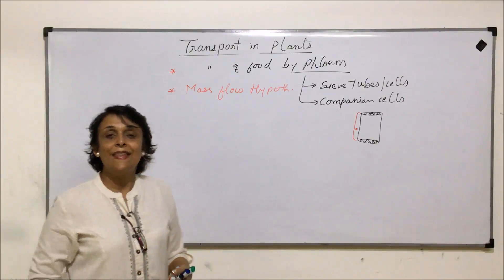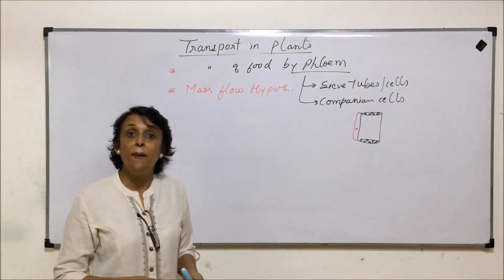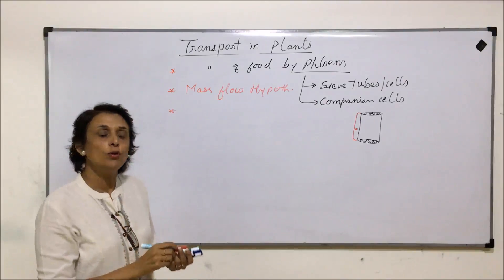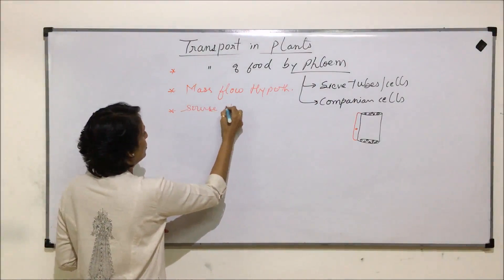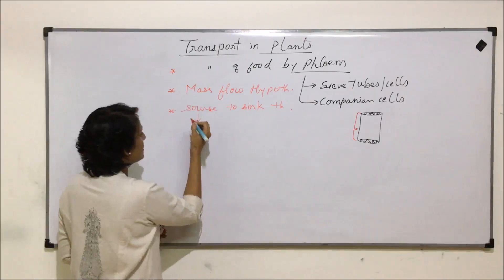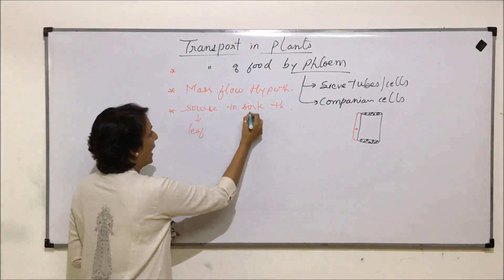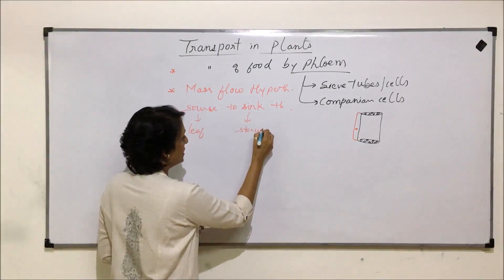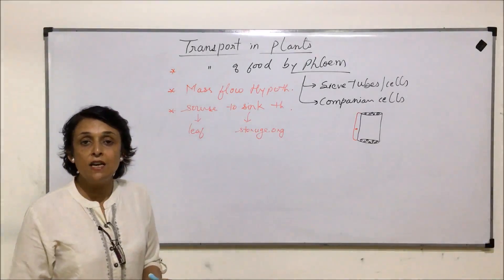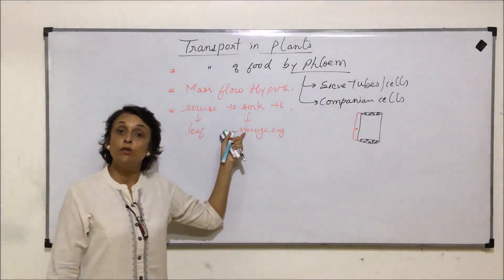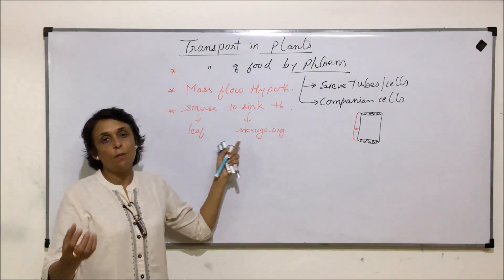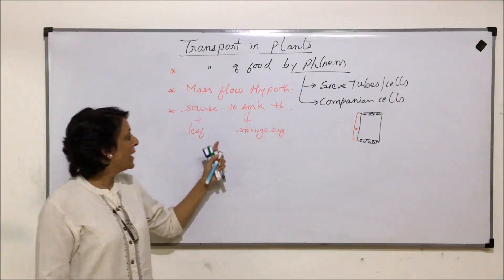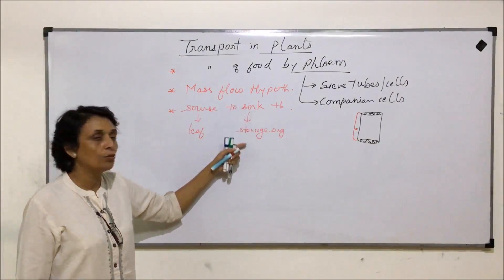Mass flow hypothesis means that the food which is to be transported goes in bulk, and it is also explained by a simple theory known as source to sink theory. Source means where the food is synthesized, that is the leaf, and the sink is the place where the food is stored. It can be storage in the root, stem, or leaf depending upon the plant. If we are talking of sugarcane then the food is stored in the stem; if talking of a tuber then it is stored in the underground stem; or if talking of beetroot then it is stored in the underground root.